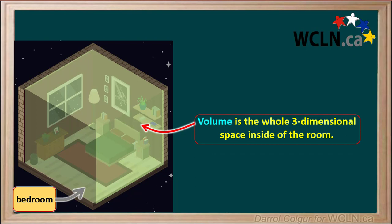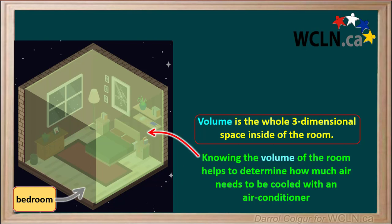If we calculate the volume of this bedroom, which is length times width times height, this gives us the total three-dimensional space taken up by the bedroom. Knowing the volume of a room helps us determine how much air needs to be cooled by an air conditioner for this room, so we can get an idea of how big of an air conditioner we need.